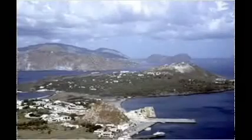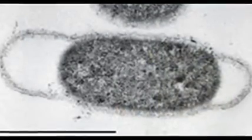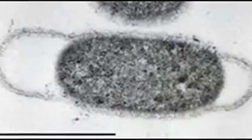In 175-degree sediments off the coast of Volcano, Italy, thrive Thermotoga maritima, some of the oldest and slowest-evolving bacteria we know.